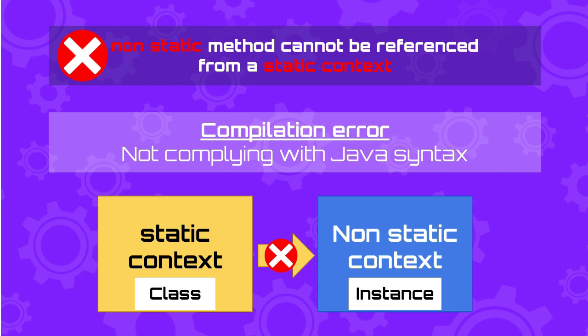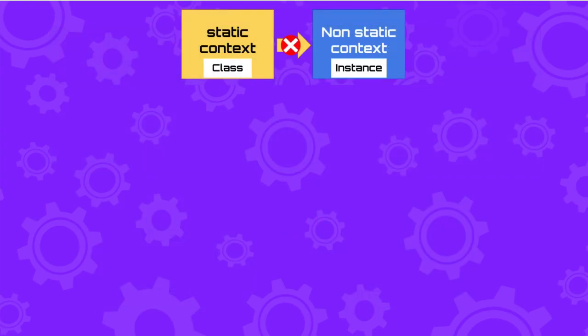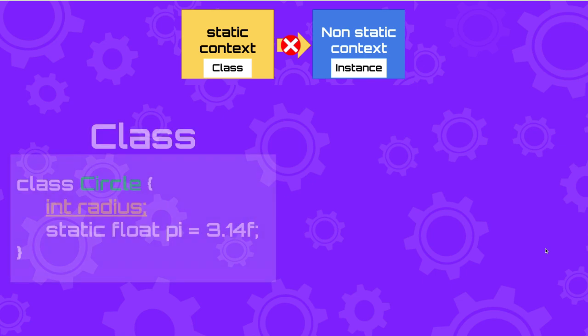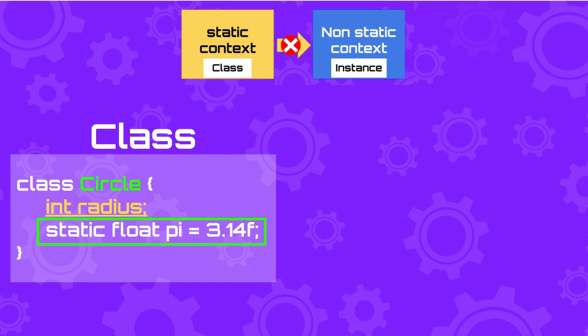In Java, a static method or static block belongs to a class and not to the object. Let's see an example. Let's say that we have a class Circle that has a non-static field 'radius' and then a static field called 'pi'. Anything that is static is part of the static context or the class context.